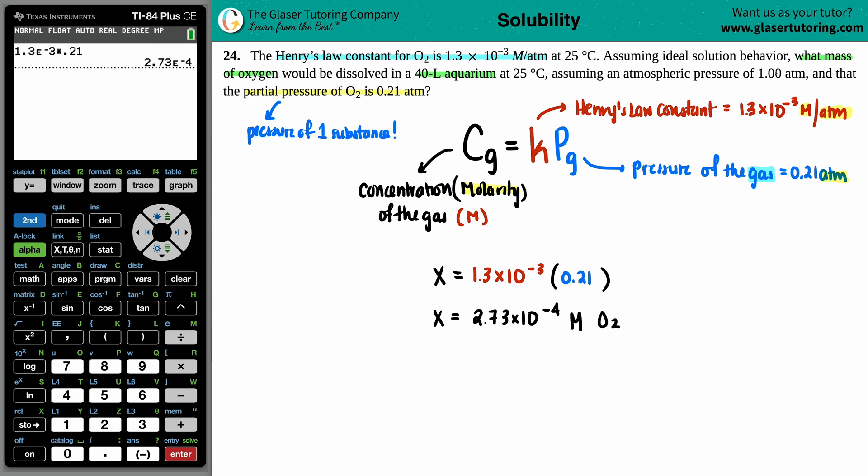Now, is that the final answer? Not really, because they wanted the mass. And keep in mind that the mass is a gram value. So how can I go from molarity to a mass? Well, there's another formula. We know another formula for molarity. Molarity equals something divided by something, right? Moles divided by liters. We just found out the molarity of being 2.73 times 10 to the negative four. And they gave us that we're in a 40-liter aquarium. So I can find out the moles.